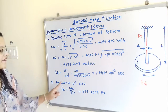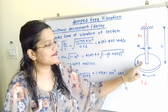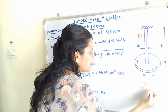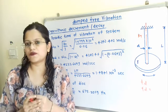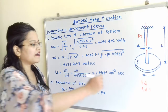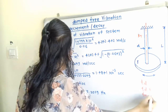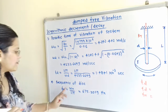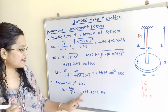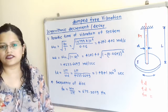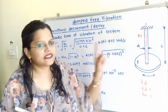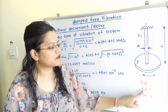The last question is the frequency of the disc when it is removed from the viscous fluid — meaning the disc is not in contact with viscous fluid. We need to calculate the natural frequency FN, not the damped frequency FD. FN = ωN / (2π). Substituting the value of ωN, the answer is FN = 675.2059 Hz. This is the natural frequency of the disc. When the disc is in contact with viscous fluid, we would instead calculate the damped frequency FD.